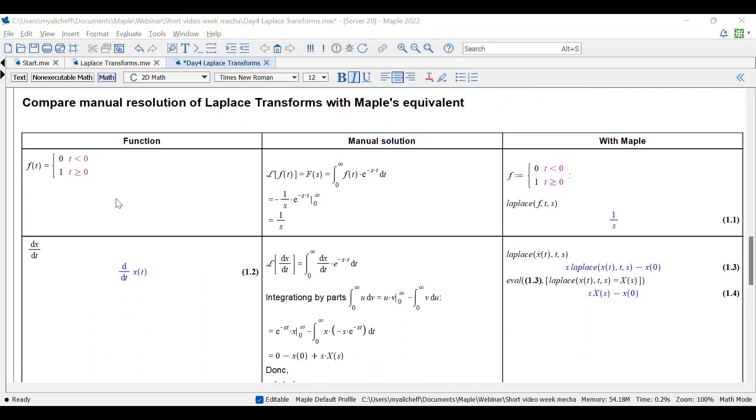So the first function here, f of t, will be equal to 0 when t is less than 0 and equal to 1 when t is greater than 0. So if you're working with the previous equation, you will do the resolution like this, using the equation we used before and you obtain 1 over s. When you're doing with Maple, you will need to define the function using the piecewise function and then using the Laplace command, you put your function and your variables t and s here and you get the same result.